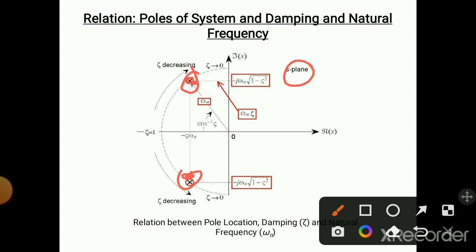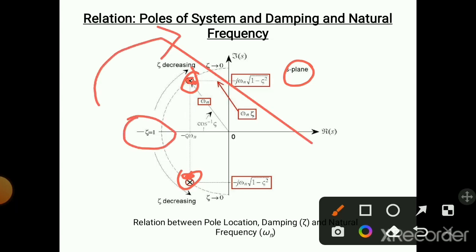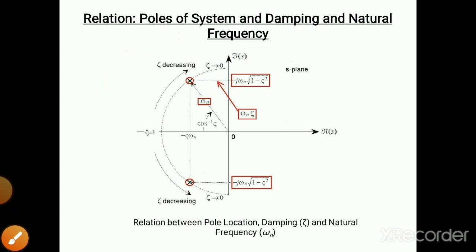From zeta equal to minus 1, as you go further, zeta is decreasing; similarly on the other side zeta is decreasing. Zeta is zero on the y-axis, which means damping is zero on the y-axis, and damping is maximum on the x-axis where the value is 1. So damping varies from the x-axis to the y-axis.